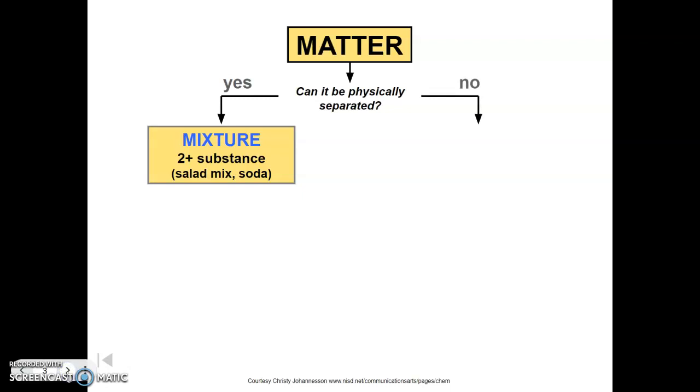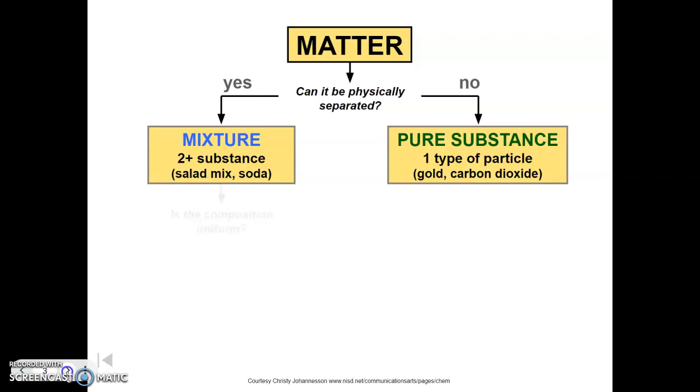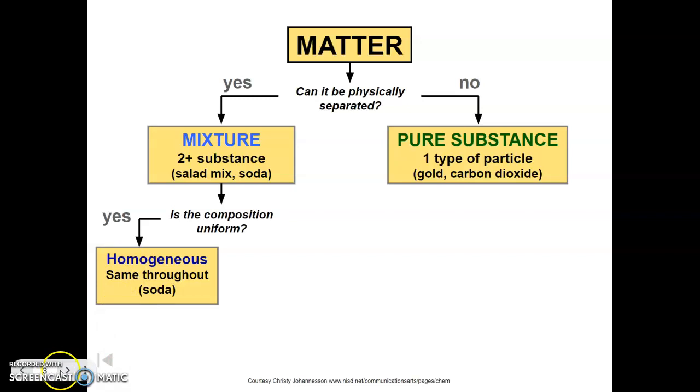If it cannot be physically separated, then it is a pure substance. So it's one type of particle, and examples of this would be like gold and carbon dioxide. Now back over on the mixture side, so let's say we determine something is a mixture. Well we can classify it a little bit better based on some more questions we can ask ourselves. So the first question we can ask is, is the composition uniform? So that just means, is the composition of the mixture the same throughout? If the answer is yes, it's a homogenous mixture. So an example of that would be soda. What I mean by that is that, like if you think about drinking a soda, it doesn't have like lumps in it, it doesn't have a texture, it's one smooth continuous texture. Which I don't think I would want to drink a lumpy soda, so it's a smooth continuous texture, so it's homogenous, and just remember homo means same. And these are also known as colloids, so a homogenous mixture is a colloid.